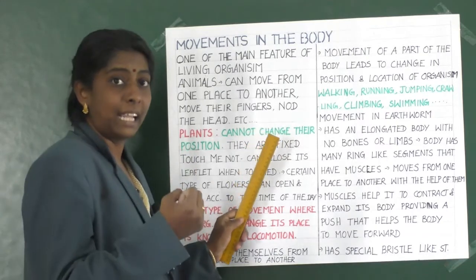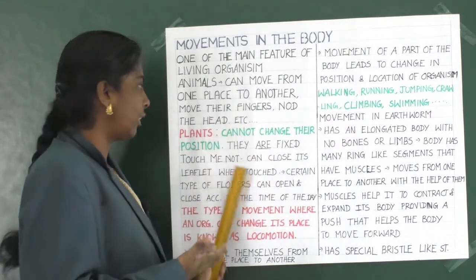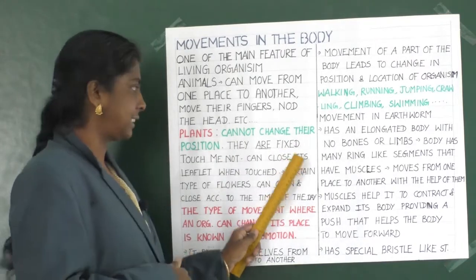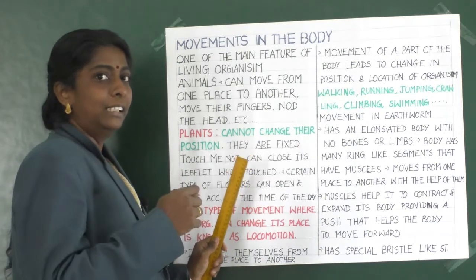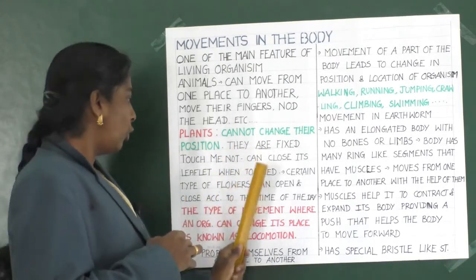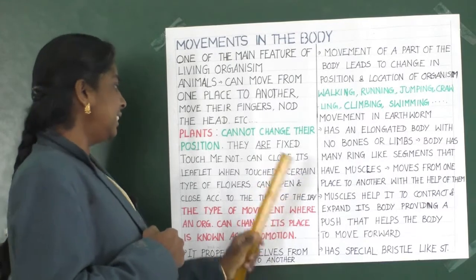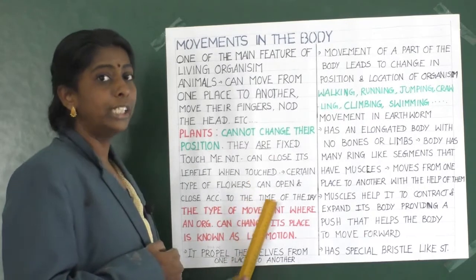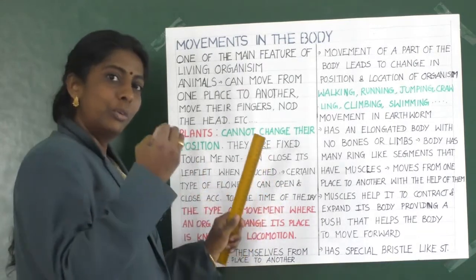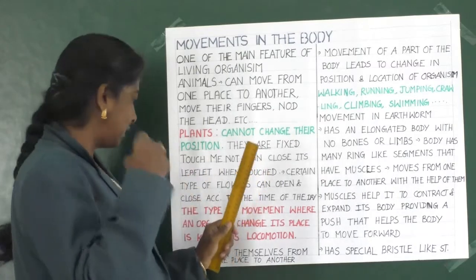Plants cannot change their position in general — they are fixed. However, for example, the plant named the touch-me-not plant can close its leaflets when touched. Certain types of flowers can open and close according to the time of day; some flowers bloom in the evening. So blooming is also a sort of movement in plants.